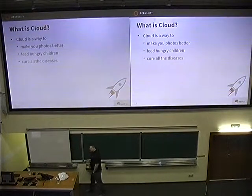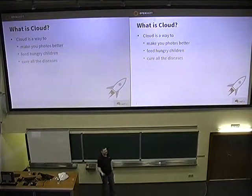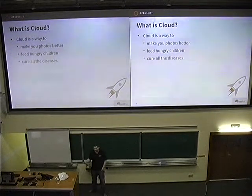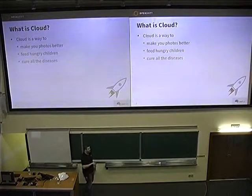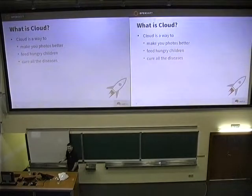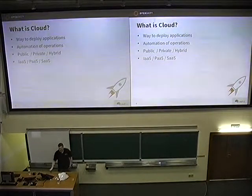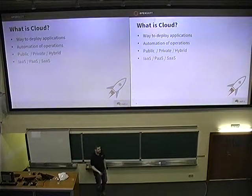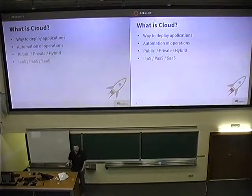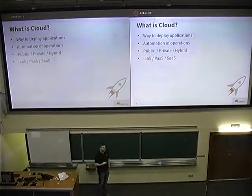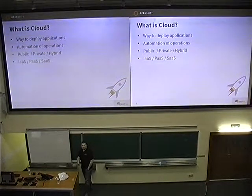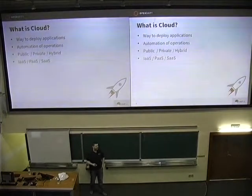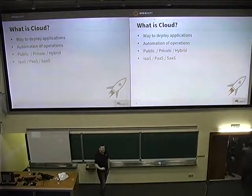Can cloud computing make photos better? Sure. Can it feed hungry children in Africa? Sure it can. Because cloud computing is the server ballot, it can also cure all diseases. But it's a bit different. Cloud computing is a way to deploy applications, systems, software — whatever. It is automation. How did cloud computing begin? Virtualization allowed Amazon to do something they called EC2, or cloud computing. And why did they do it? They wanted money — economies of scale.